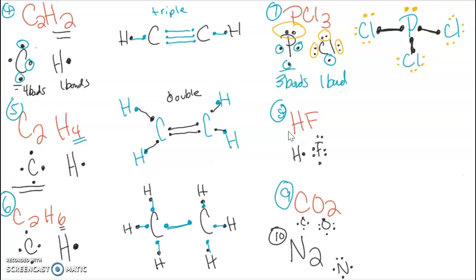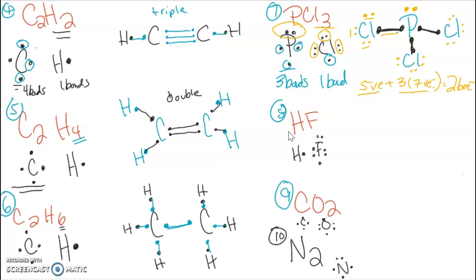Now we just check our electrons. Phosphorus has five valence and there's one phosphorus. There are three chlorines that have seven valence each — so 21 plus 5 gives a total of 26 valence electrons. Counting the electrons in our structure: two, four, six, eight, ten, twelve, fourteen, sixteen, eighteen, twenty, twenty-two, twenty-four, twenty-six — we meet our valence count.